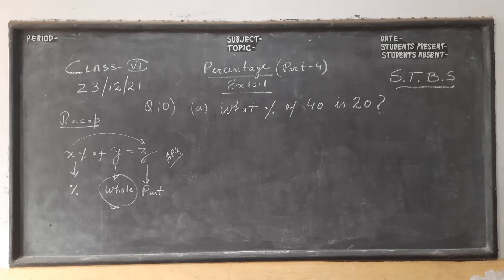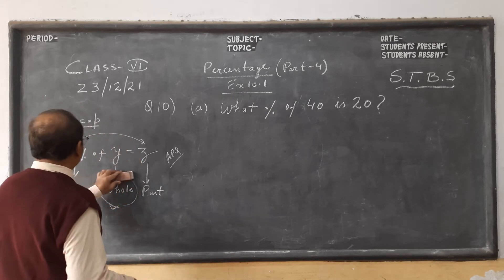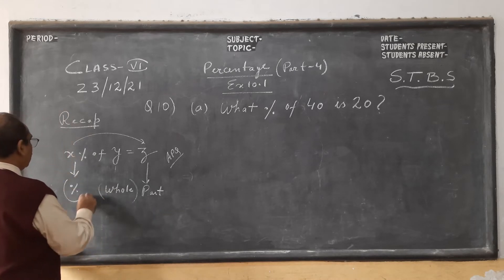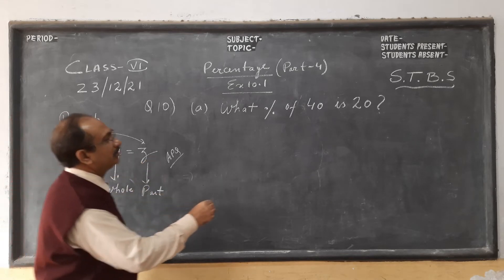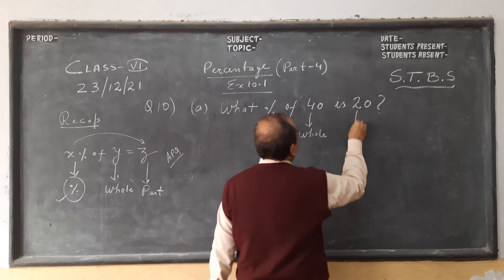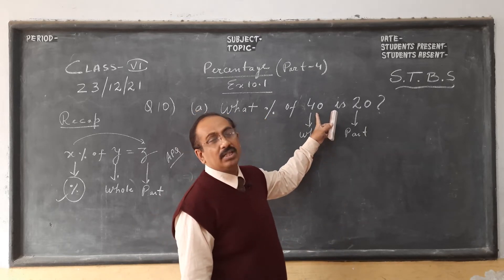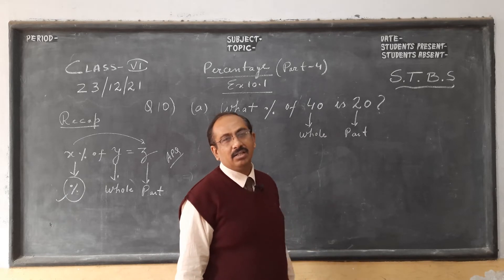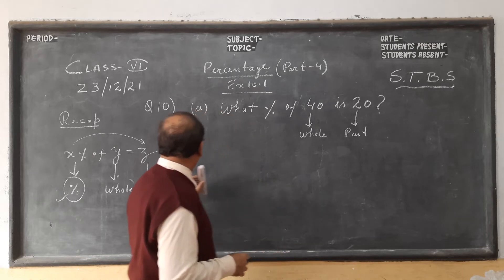Now we move on to question number 10: what percent of 40 is 20? Here we have to find the percent. The whole is 40 and the part is 20 — in fact this is the half. So the answer will be 50%. Suppose in an exam of 40 marks you get 20, that is half, and out of 100 that is 50 percent.